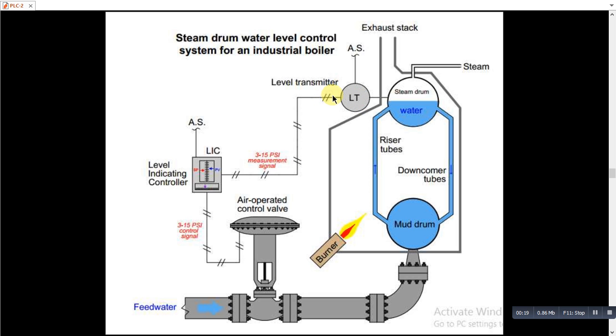This is an example of a pneumatic control system in which we have pneumatic lines in which the pressure is 3 to 15 psi depending upon your level signal.